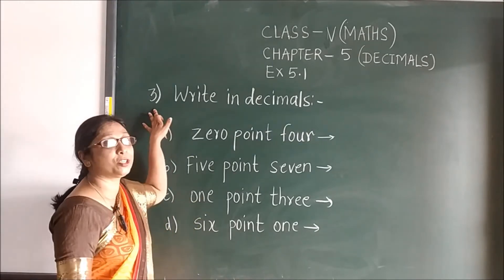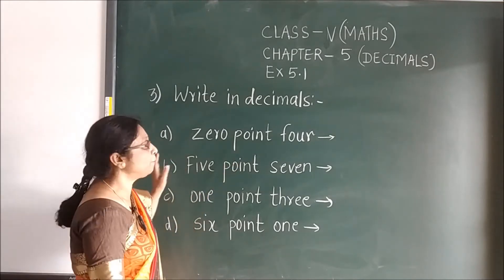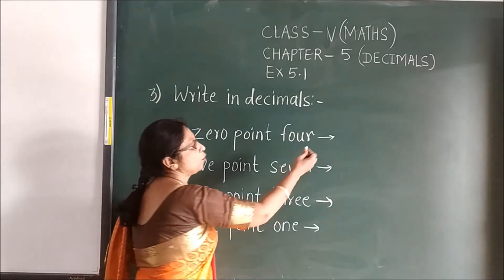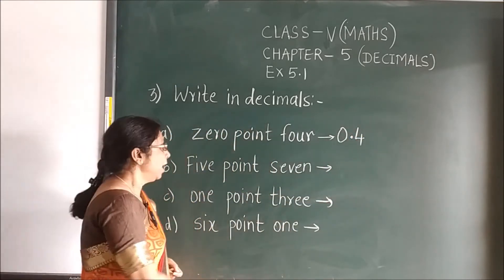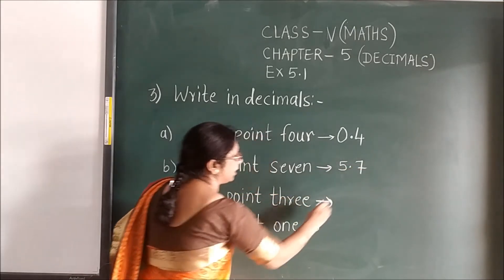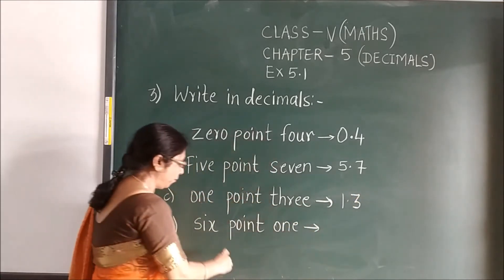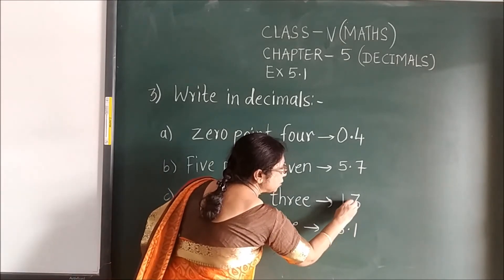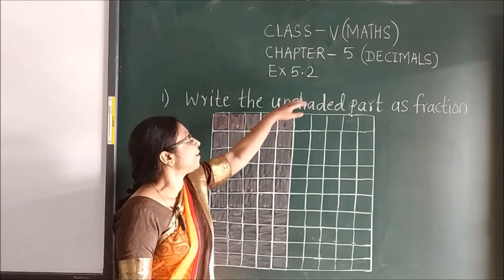Now in the third question, it says write in decimals. This is given in word form, children, and you have to write in decimal. For example, 0.4 — you write 0, then 0.4. Clear? Now 5.7 — you write 5.7. It is very easy. 1.3 — you write 1.3. Then 6.1 — you write 6.1. As you pronounce it, the same way you have to write. Is it clear?